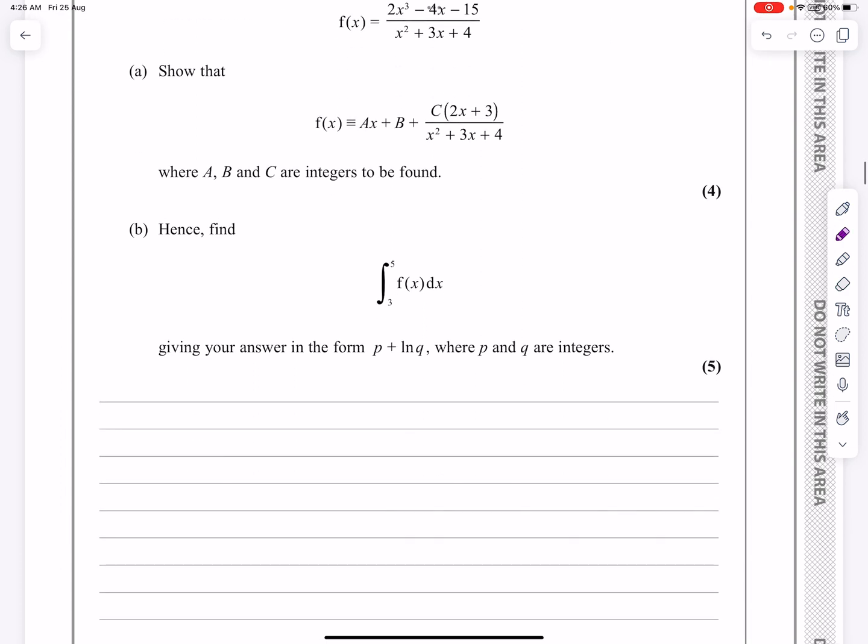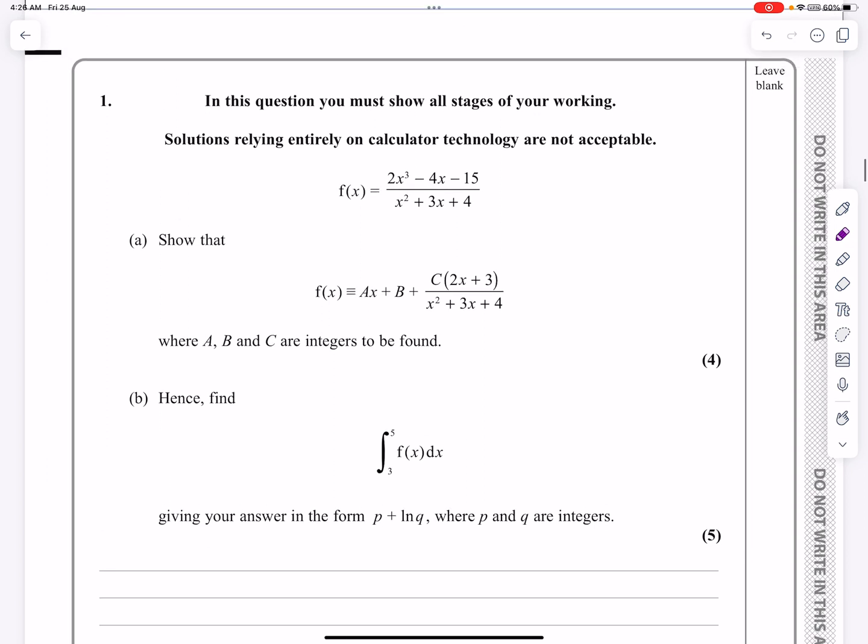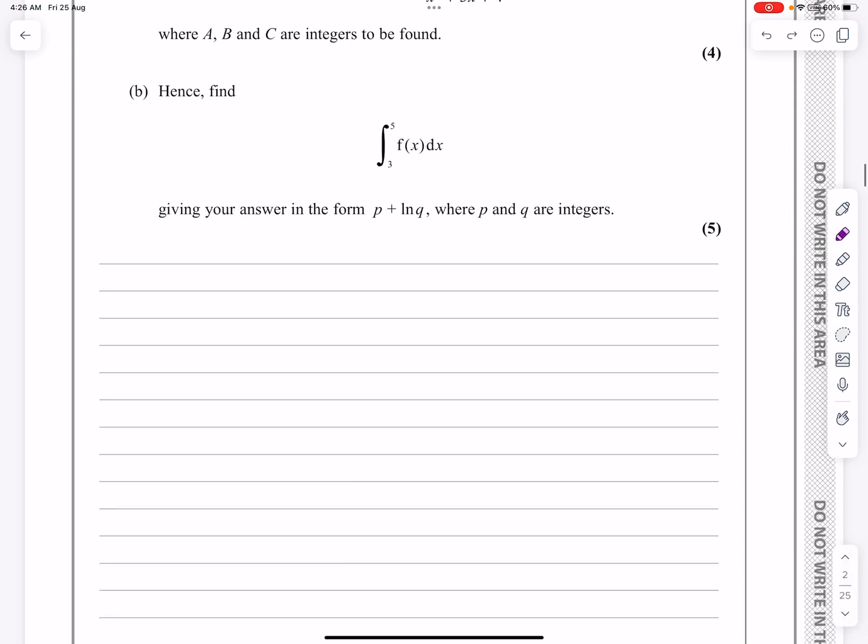So for part A then, if I'm going to do the algebraic long division here, my first step is just to check this function and see that there are no issues with it. And actually, there are issues straight away in the fact that I can't see anything to do with x squared.